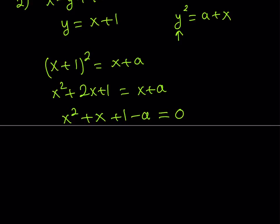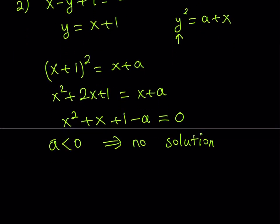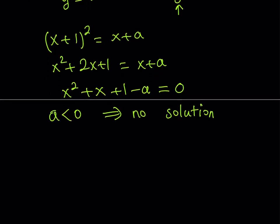Now, suppose a is equal to 0. In this case, you're not going to have any solutions for this equation because x squared plus x plus 1 does not give us any real solutions. Not only that — if a is less than 0, you're not going to get any solutions from here either, because you're going to get a quadratic whose discriminant is negative. And if a is between 0 and 1, you're also not going to get any solutions because the discriminant will again be less than 0. Between 0 and 1, there are no solutions.